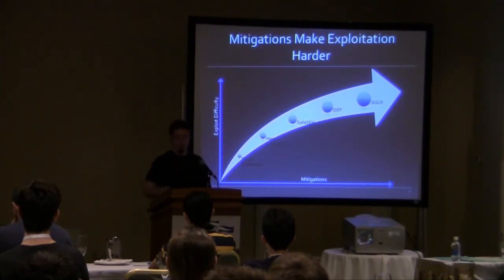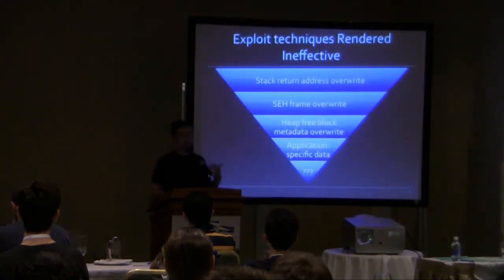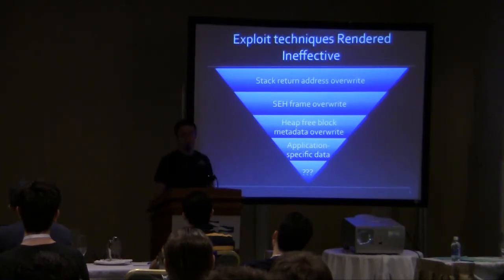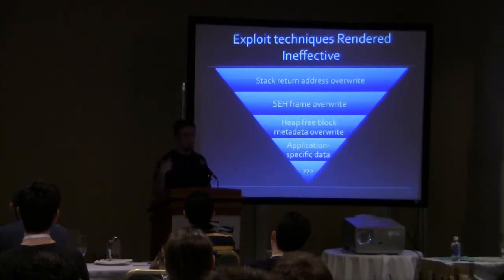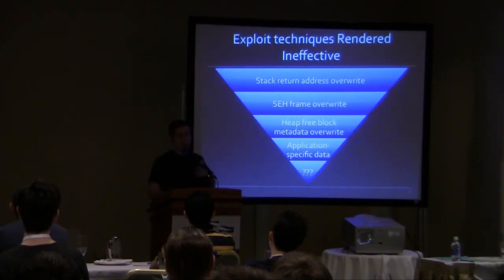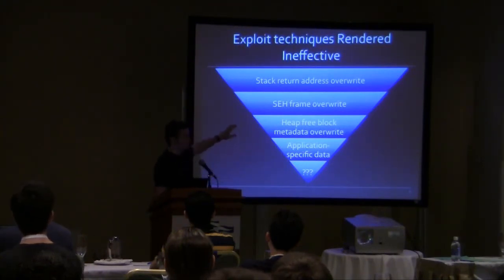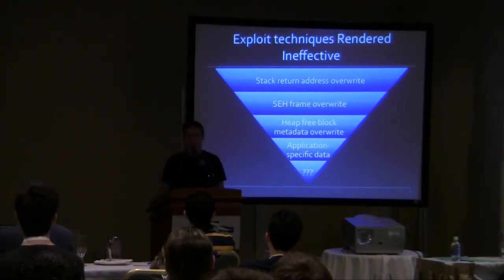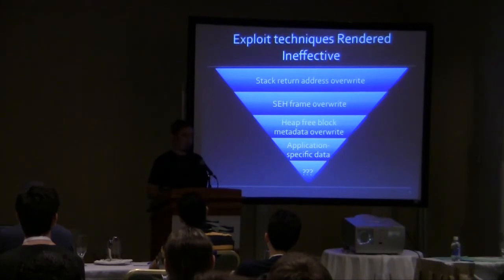These mitigations also eliminate entire classes of exploitation techniques. The protected stack, for instance, completely killed the stack return address overwrite — the vanilla stack overflow compiled with /GS is largely gone. Attackers then moved to the SEH frame overwrite, and mitigations addressed that too. This is how exploitation has moved forward. Where we are now is heap free blocks are out of fashion with protected heaps, so attackers look for application-specific data — in particular C++ vtables or any other function pointers. After those get protected, you have to figure something else out.